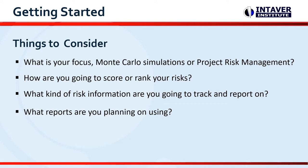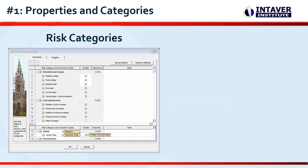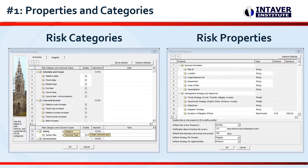Here are some general recommendations. Number one: modify properties and categories. We recommend that you modify the risk categories and risk properties using these menu items to have as many as required and as little as possible. This will simplify adding, assigning, and managing risks.